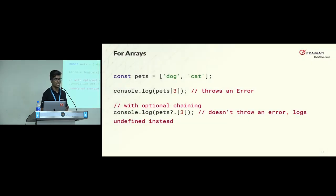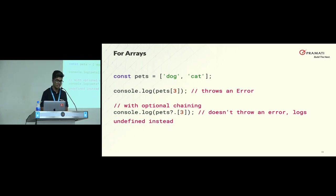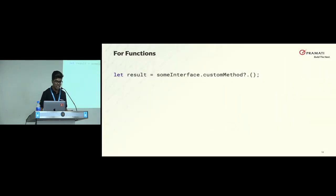Optional chaining is not only for objects. If you're trying to access something in arrays, even though the length of my array is two and I can access only up to pets of one, but if I'm trying to access pets of two or pets of three, it would throw an error. But if I combine it with optional chaining using question mark dot on pets of three, it doesn't throw an error — it just logs undefined instead. The same thing can be used for functions as well, in any closures or in any objects. You can use optional chaining to first validate the existence of the function and then actually call it.